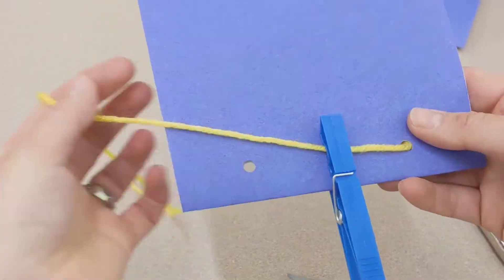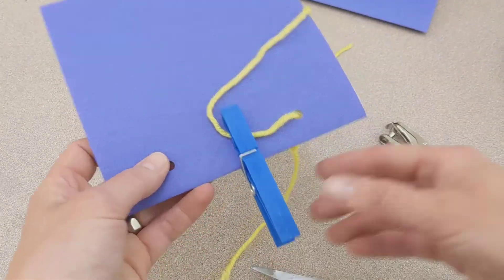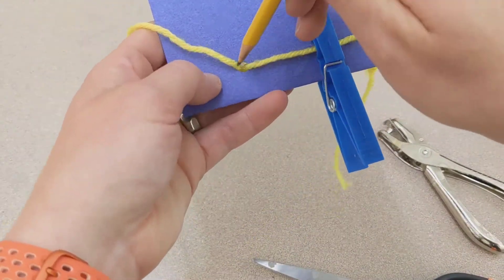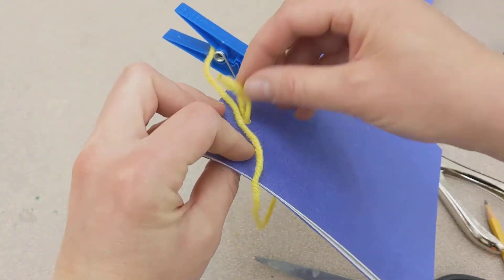I'm going to make this kind of fancy, and I'm going to tie it across the back. So I just looped it underneath my clip, and I'm going to poke that through with my pencil on the other side. I'm going to grab that.